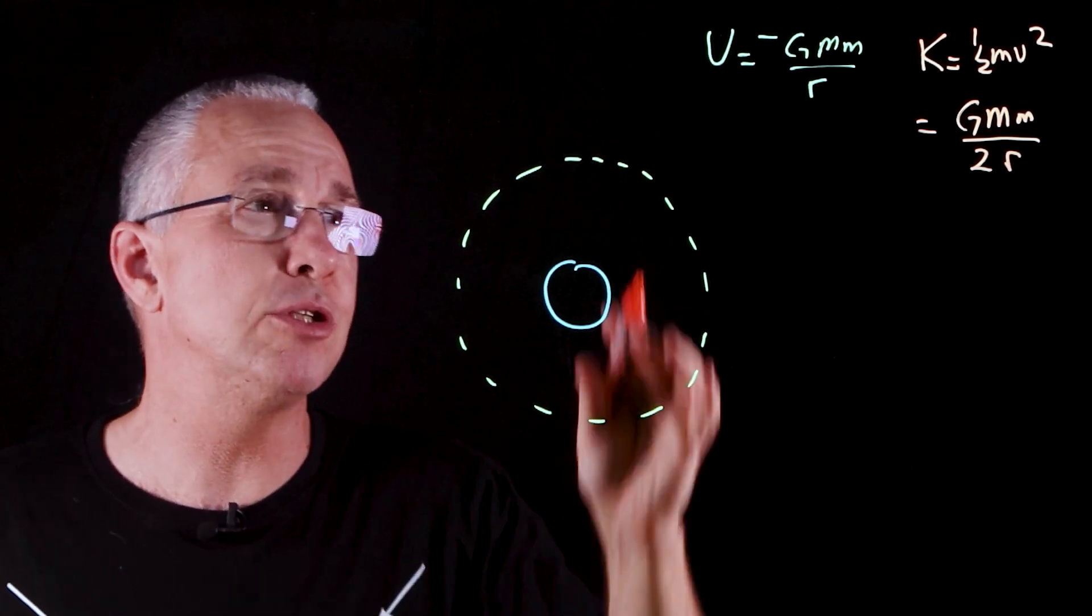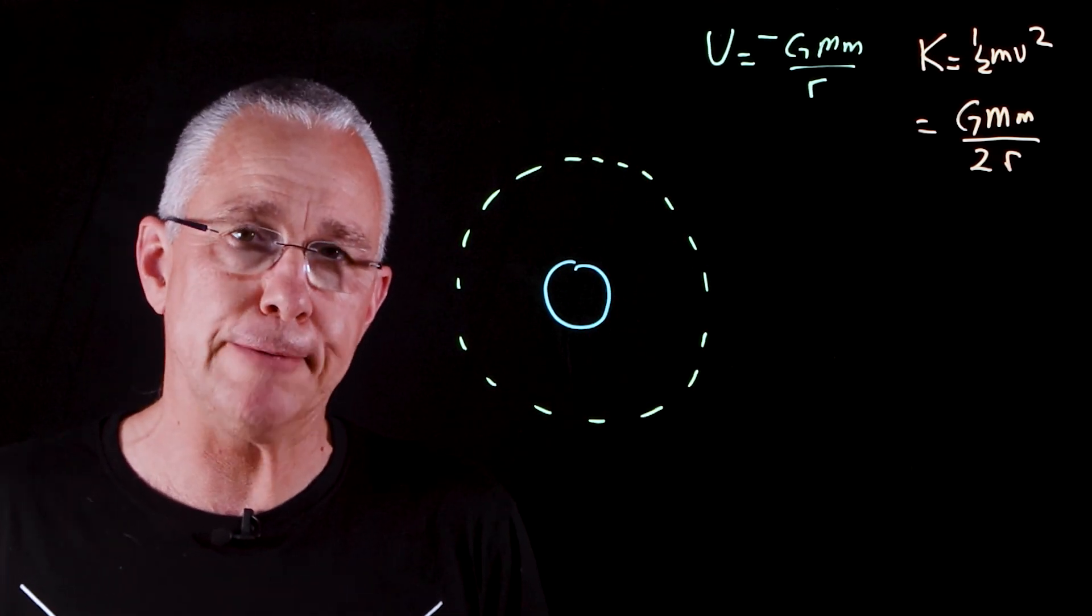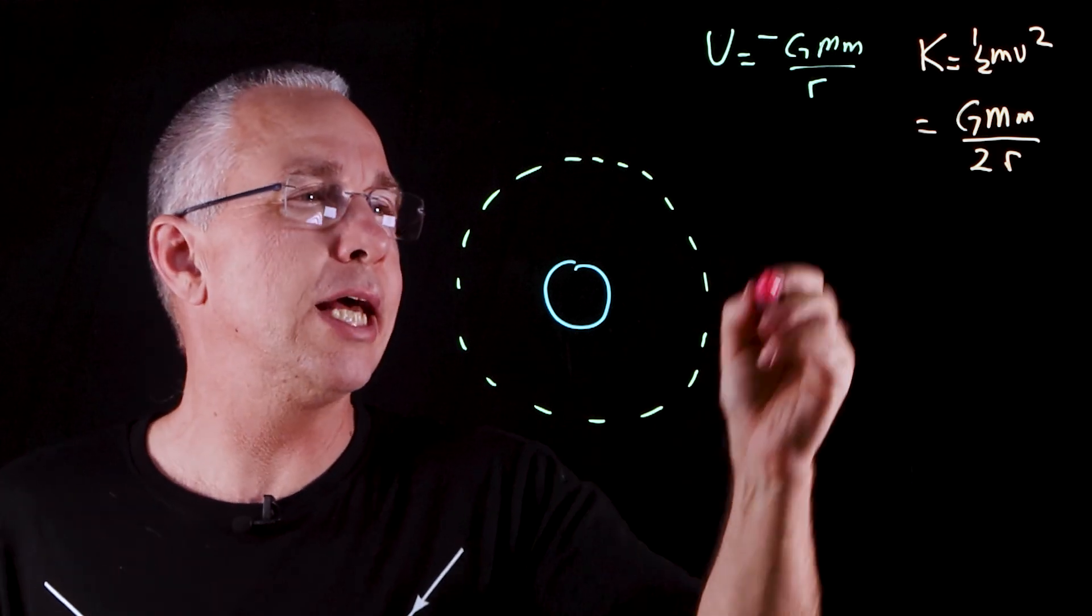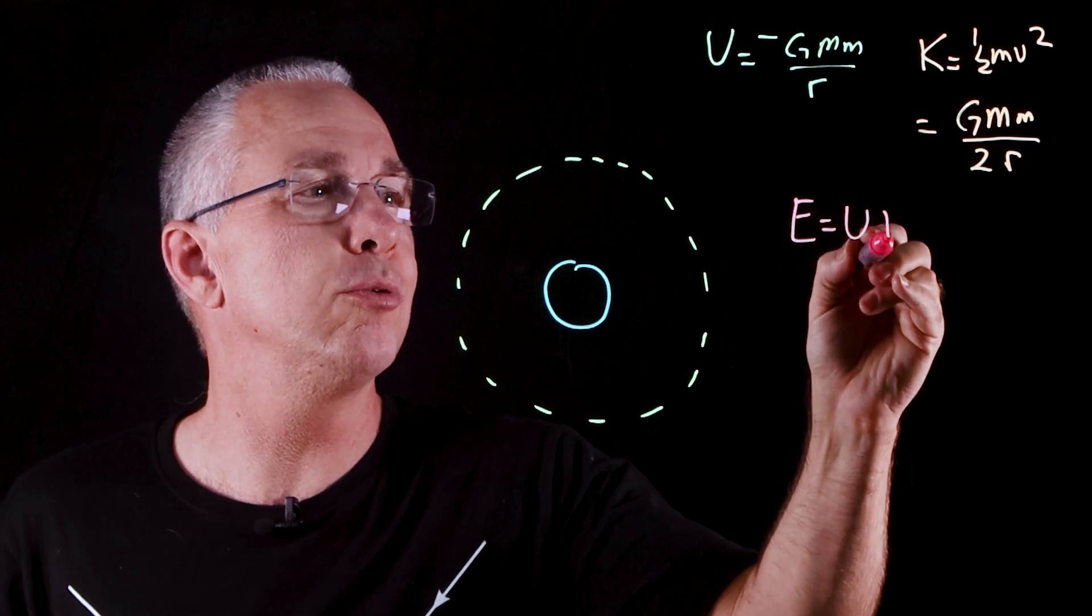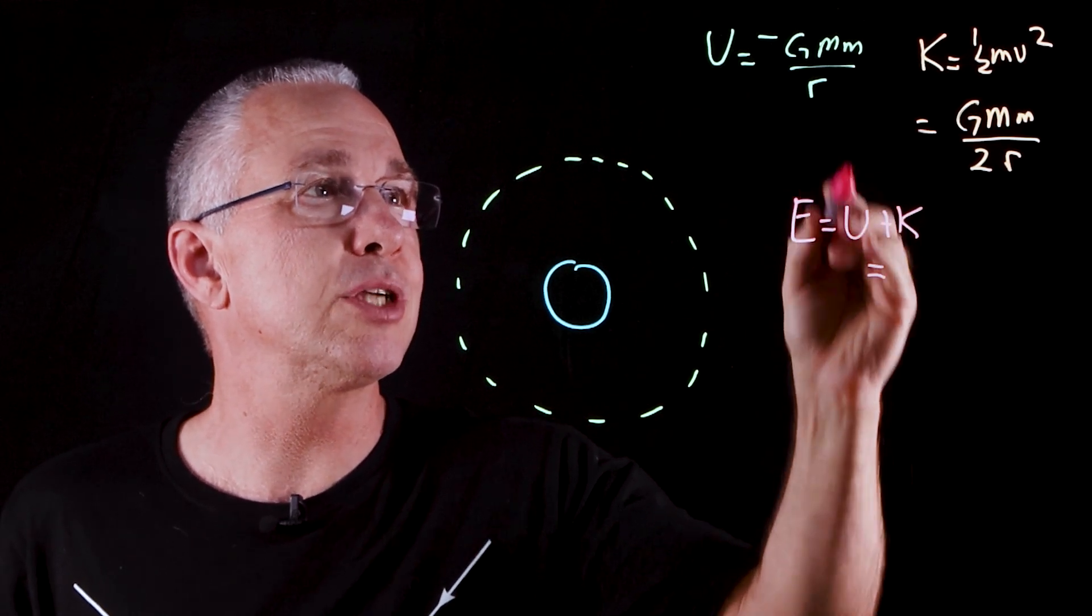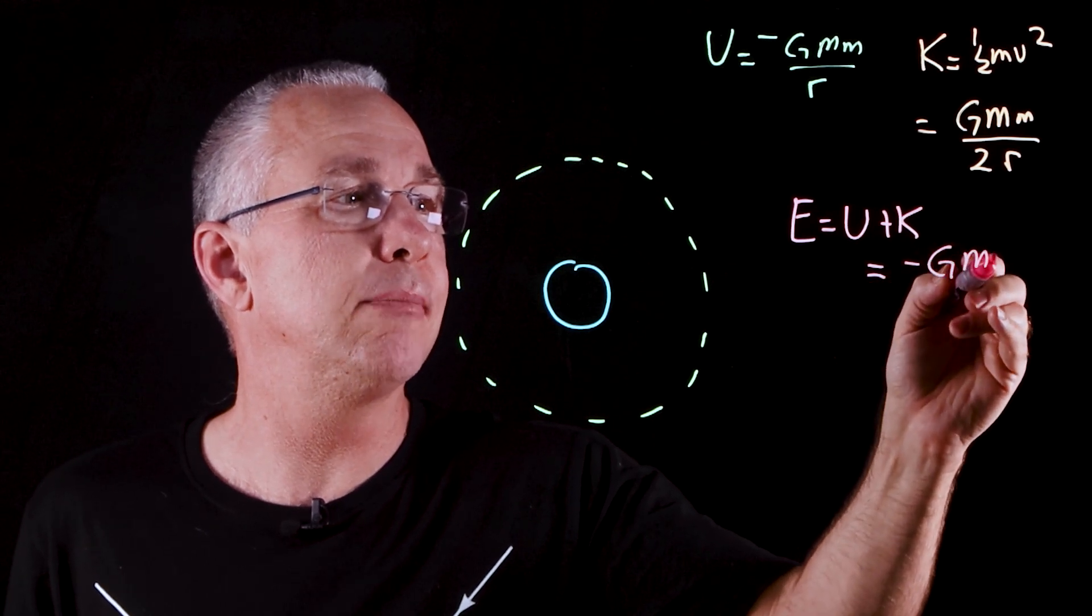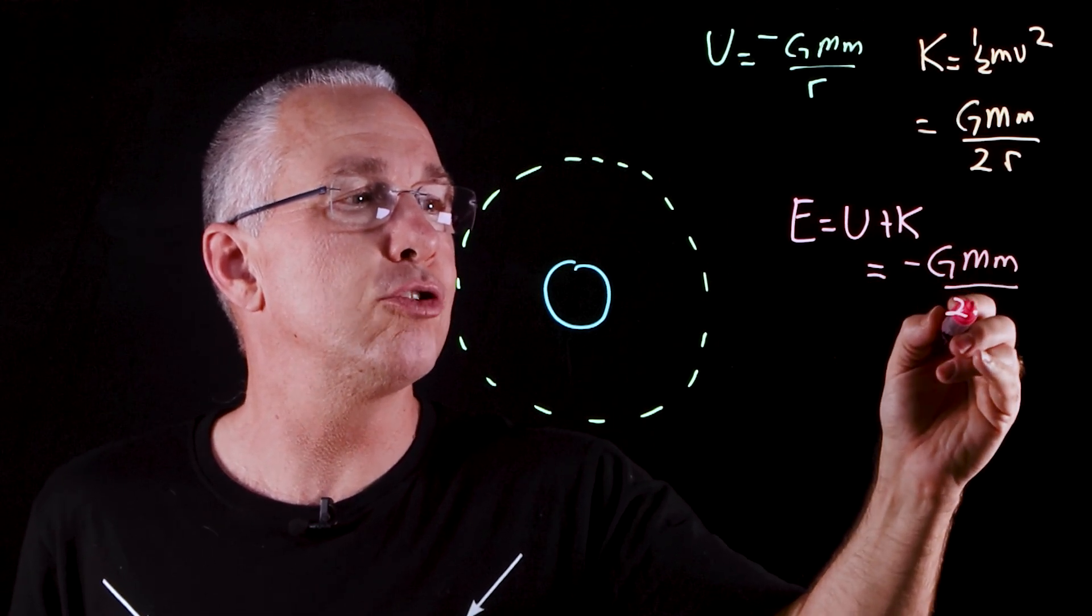Automatically you see that there's a relationship between U and K. But what we're really interested in is the total energy. And so the total energy is simply the sum of those two, U plus K, and you can see what's going to be here is going to be negative G capital M lowercase m over 2 r.